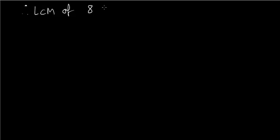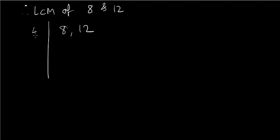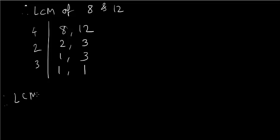The smallest number divisible by both 8 and 12 is their LCM. Calculating LCM of 8 and 12: LCM = 4 × 2 × 3 = 24. So the smallest whole number divisible by both 8 and 12 is 24.